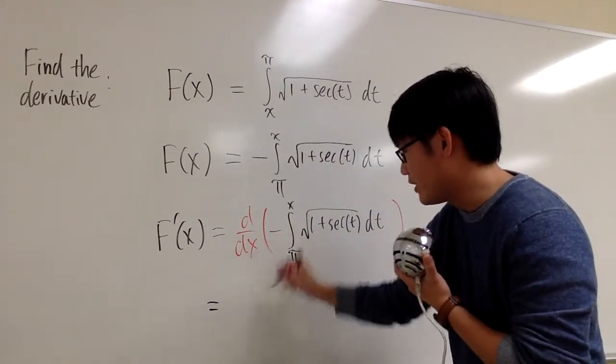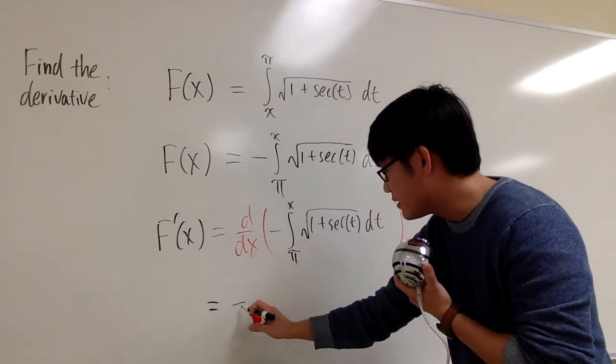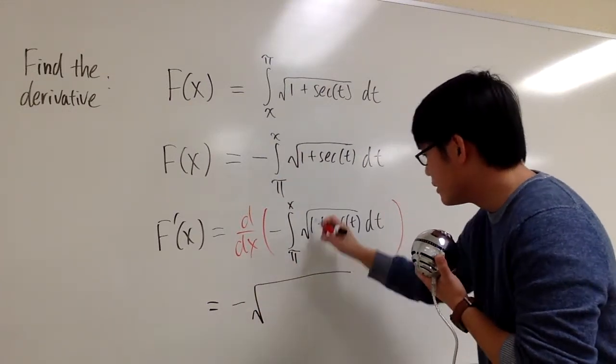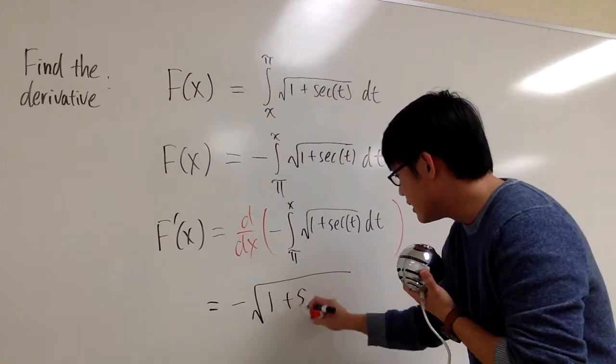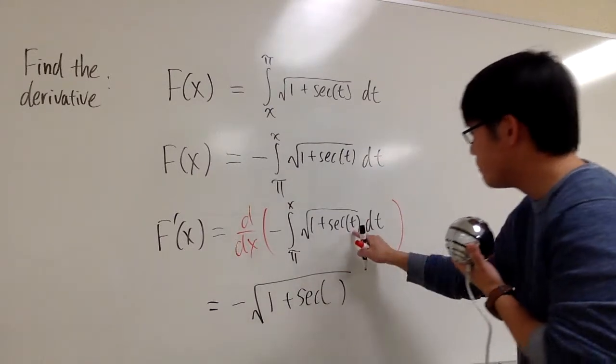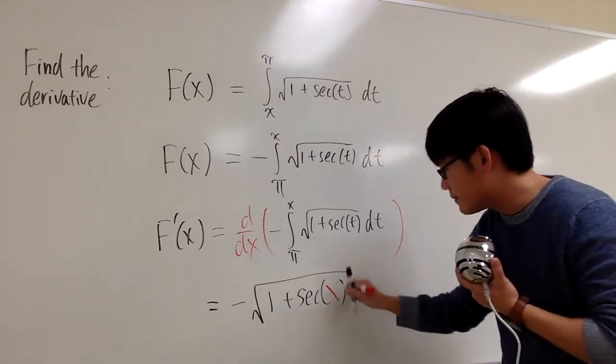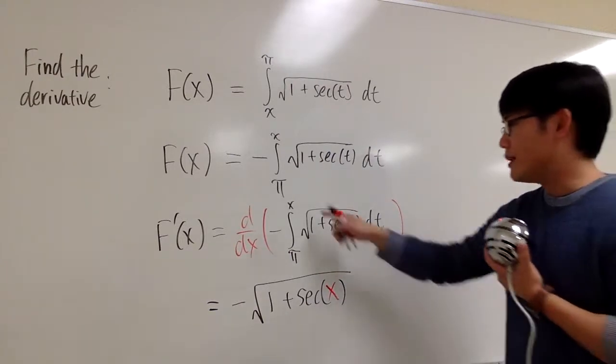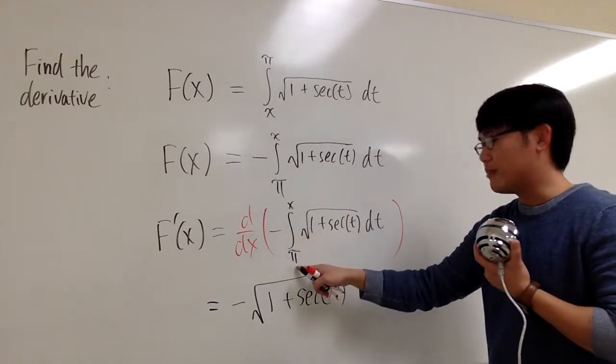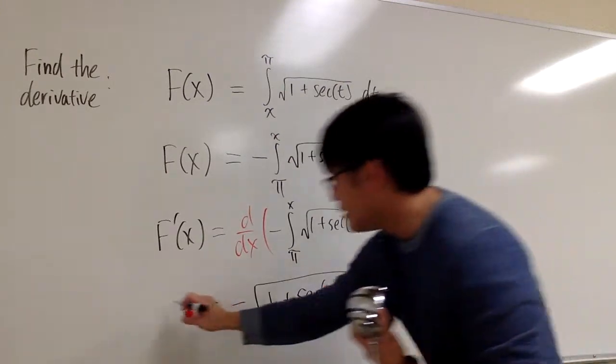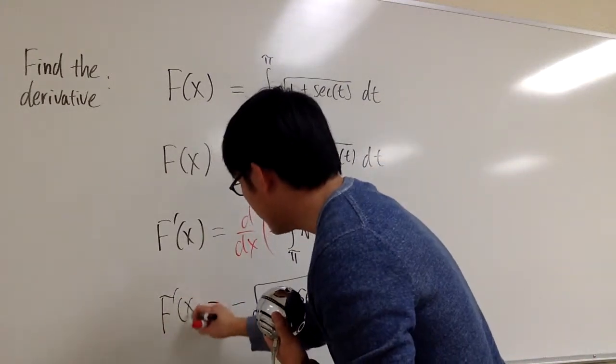So we have, don't forget the negative. Negative stays the same. Square root, the 1 stays the same, plus secant stays the same. But instead of t, you're going to use x. And that's it. Especially if this is just x and we have a number down here. That's it. This is f prime of x.